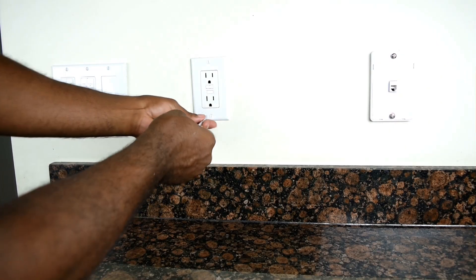So we're going to turn off the breaker before we get started. The first thing we want to do is remove the wall plate.